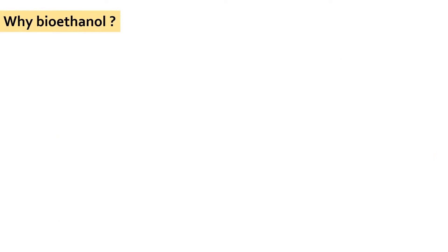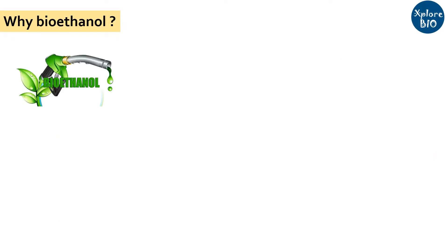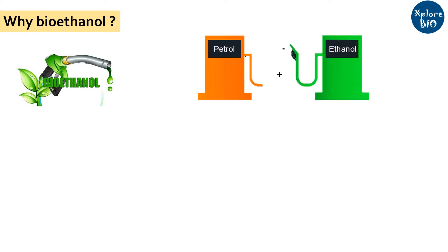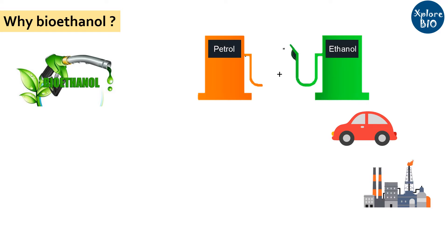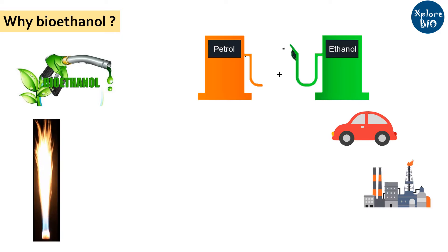But why bioethanol? Bioethanol can either be directly used as fuel or it can be blended with petrol to power vehicles and industries. It has a high octane number and burns almost completely, liberating carbon dioxide and water, minimizing air pollution.